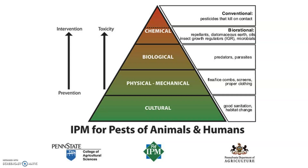Physical or mechanical methods might be physically picking or removing those pests. Biological methods might involve introducing a predator or parasite, or using genetic manipulation to make it an unfavorable environment. Then as a last resort we have chemical pesticides or repellents to get rid of the pests.